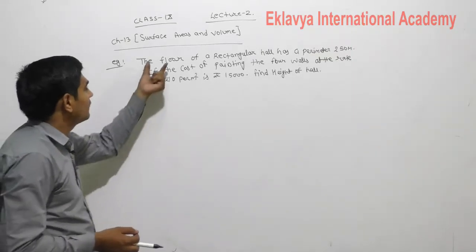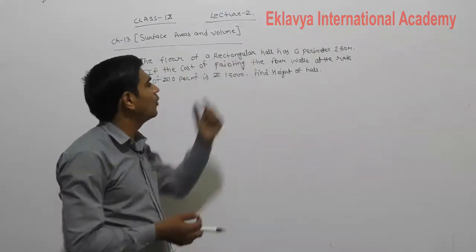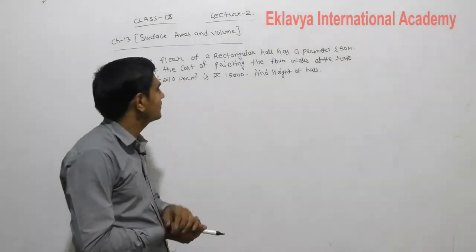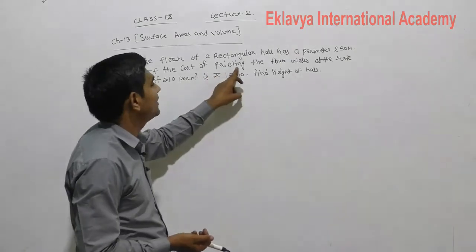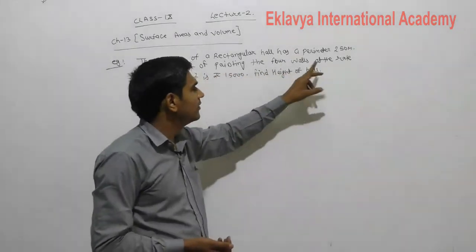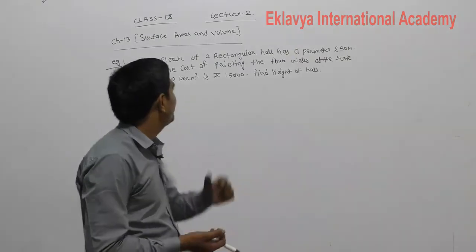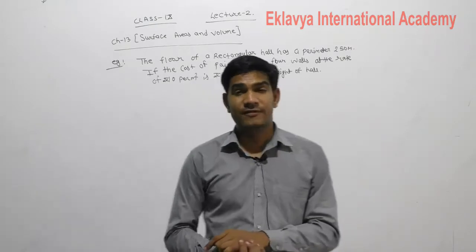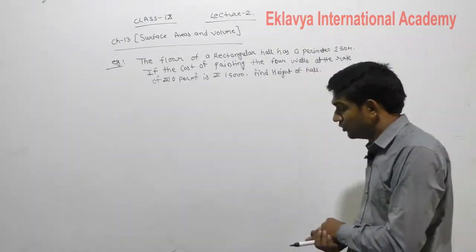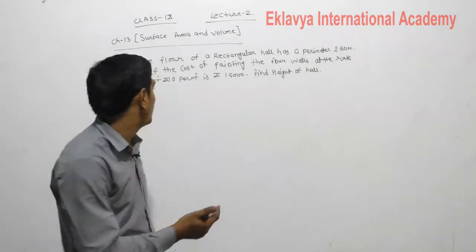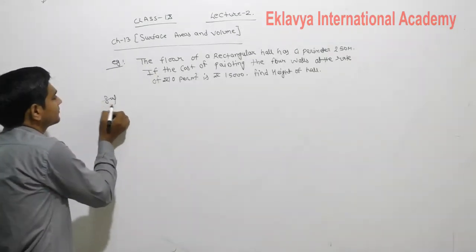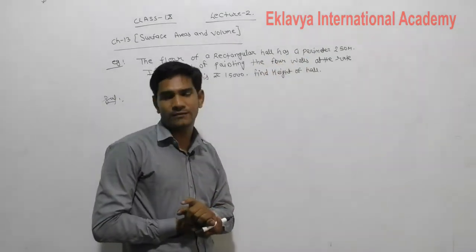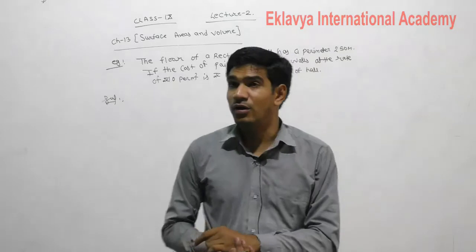The first question: the floor of a rectangular hall has a perimeter of 250 meters. If the cost of painting the four walls at the rate of 10 rupees per meter square is 15,000 rupees, then find the height of the hall. How will we find out the height of the hall? The perimeter of the rectangular hall is given as 250.